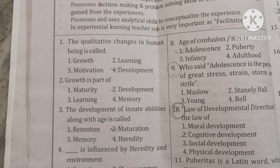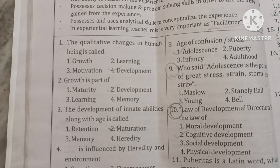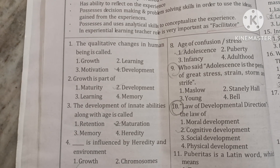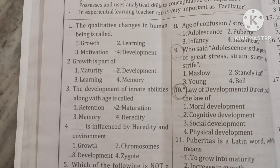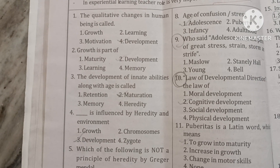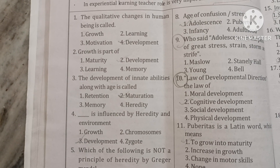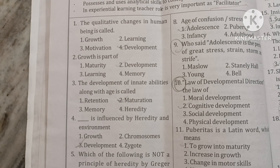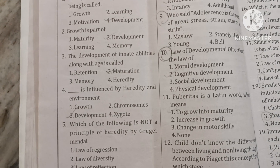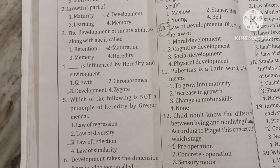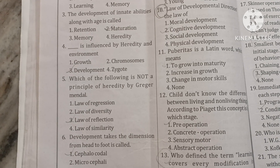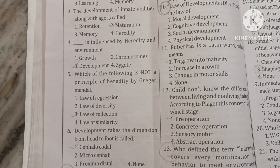First question: the qualitative changes in human being is called development. Growth is a part of development. The development of innate abilities along with age is called maturation. Development is influenced by heredity and environment. Which of the following is not a principle of heredity by Gregor Mendel? That is the law of reflection.